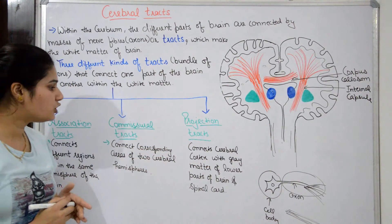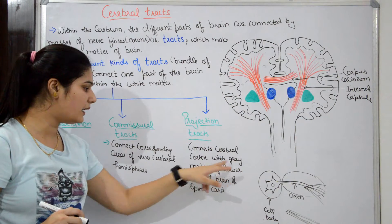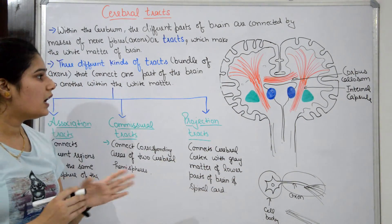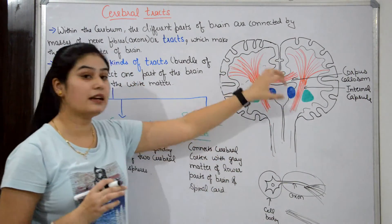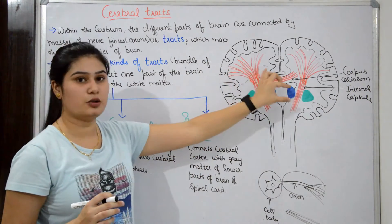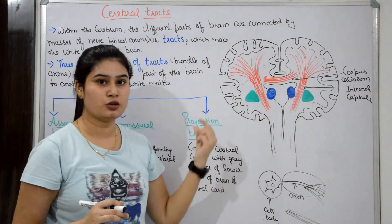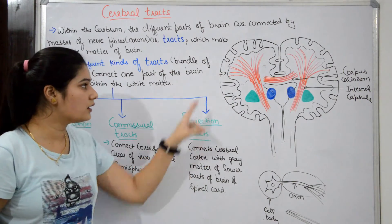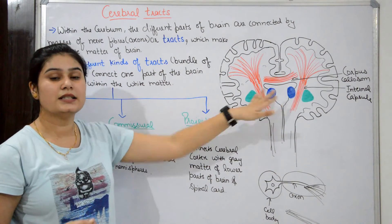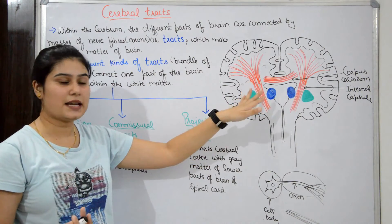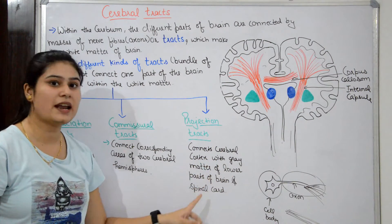Projection tracks connect the cerebral cortex with grey matter of lower parts of the brain and spinal cord. Within the cerebrum, grey matter is also present in some masses, called nuclei. The projection tracks connect the outer cortex with deeper grey matter structures like the thalamus, hypothalamus, brain stem, and then the spinal cord.